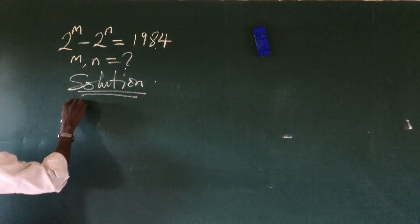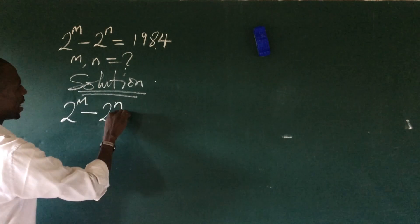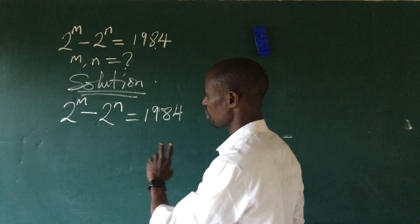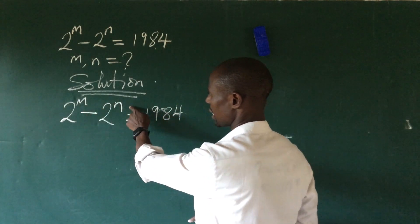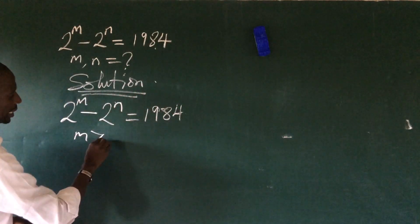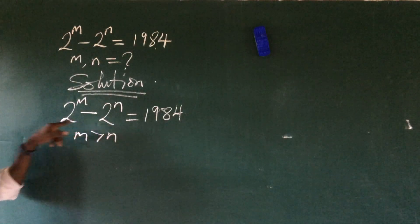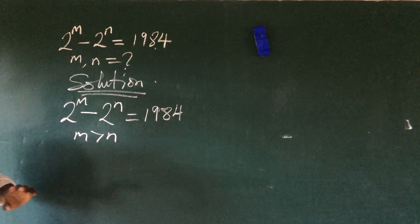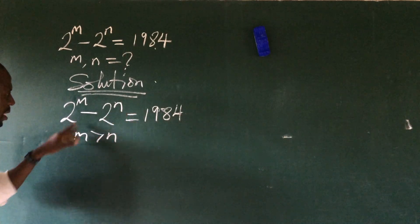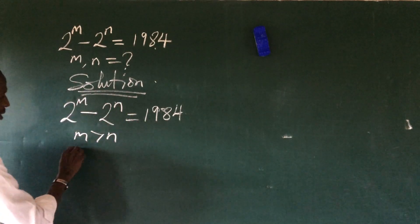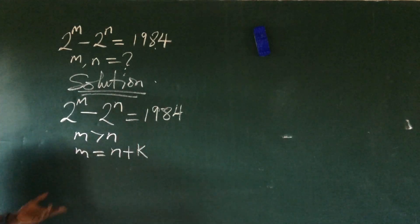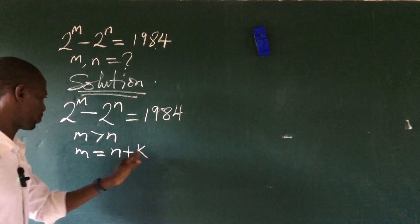We put down the question which is 2 to the power of m minus 2 to the power of n equals 1984. Now if you look at this question, you will discover that m is greater than n, because the bases are the same. Since the bases are the same, this figure will be greater than this, so m is greater than n.